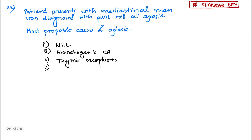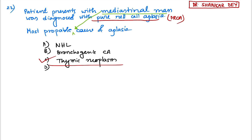Question number 22: a patient presented with a mediastinal mass and was diagnosed with pure red cell aplasia. The most probable cause of this aplasia — given the mediastinal mass — is thymic neoplasm. Thymic neoplasm (thymoma) is the most common mediastinal mass associated with pure red cell aplasia.